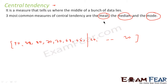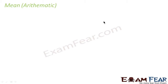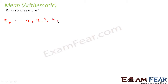Let's explore mean with an example. You have two students and you want to find who studies more. Student A studied four hours, two hours, three hours, four hours, and five hours — that's per day from Monday to Friday. We observed this student for five days.